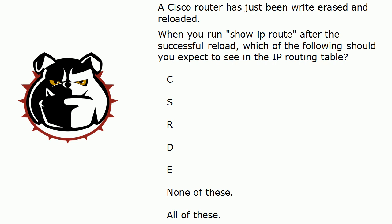Here's the first question. A Cisco router has just been write-erased and reloaded — and I happen to have done that sitting right here. Now when you run Show IP Route after the successful reload, which of the following codes should you expect to see in the IP routing table? C, S,